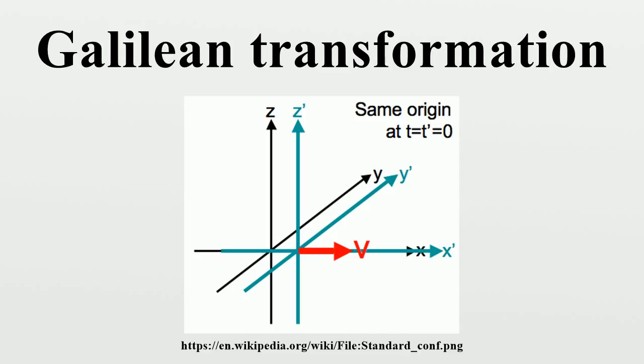Since the transformations depend continuously on s, v, r, y, Gal is a continuous group, also called a topological group. The structure of Gal can be understood by reconstruction from subgroups.